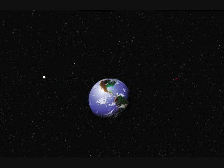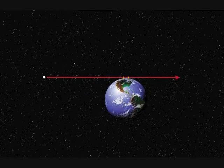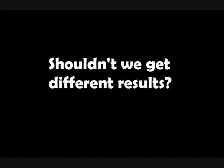So doesn't it make sense that just like when the satellites were moving, they got a different calculated speed of light, that if the Earth were moving, we would have a different calculated speed of light? And that's my question. That's what I don't understand.